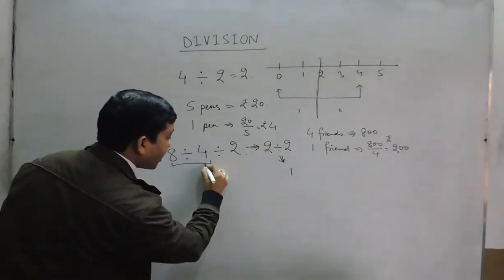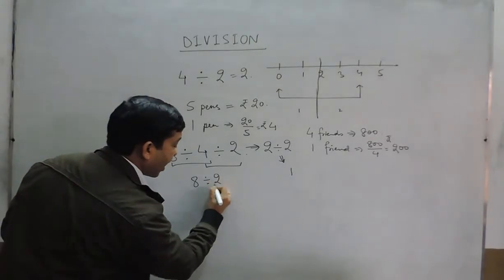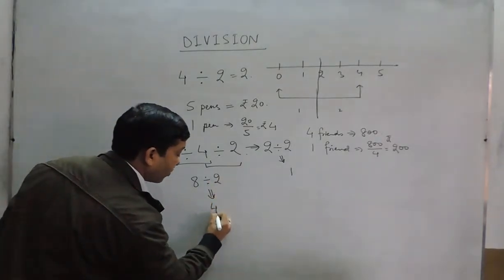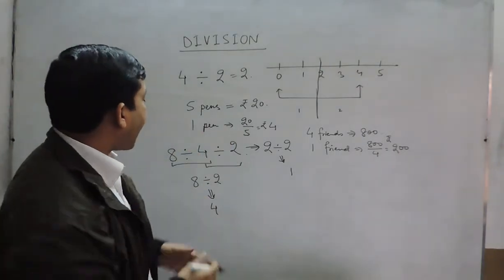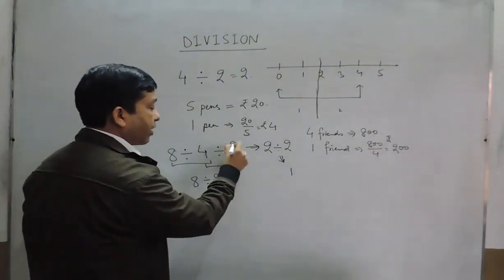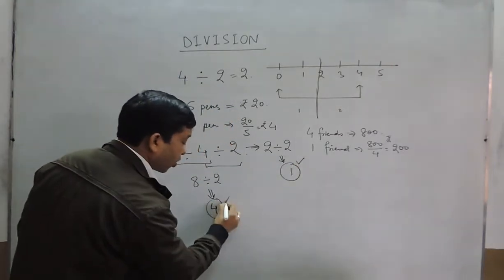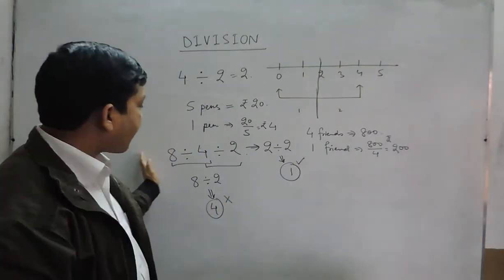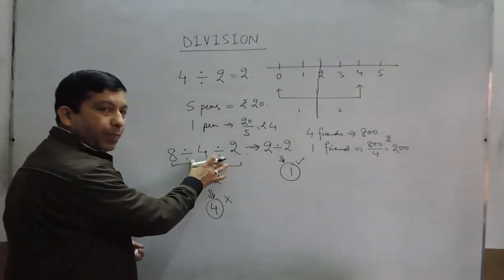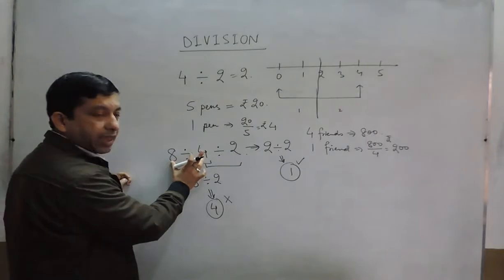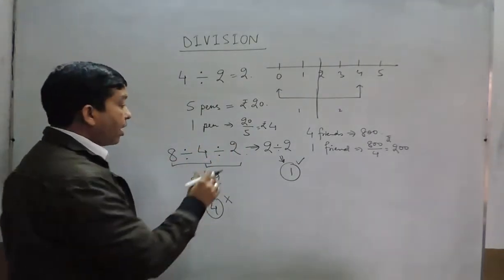While others say that first we solve 8 divided by 2, where the answer comes out to be 4. Now I am saying that when it is written as 8 divided by 4 divided by 2, the correct answer is 1, and the answer of 4 is wrong, because we have to go from left-hand side to right-hand side in division.